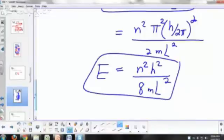So those are the allowed values of your energy for your particle in a box.